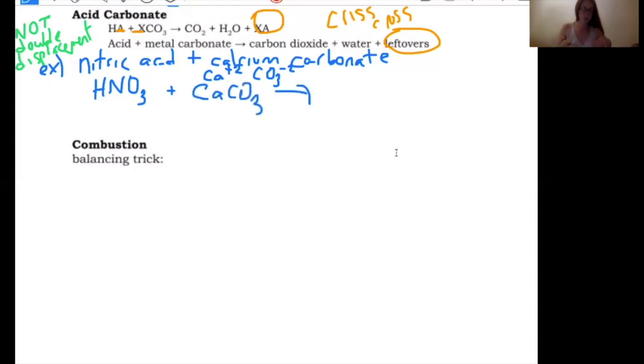Now, if you're just looking at the formulas that I've written, HNO3 and CaCO3, you might forget this is an acid carbonate. So maybe make some note to yourself as soon as you realize it, like acid carbonate, so that you don't mess that up. Soon as I know it's acid carbonate, I know I get CO2. I know I get H2O.